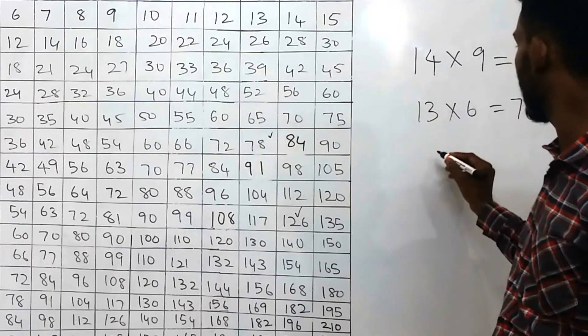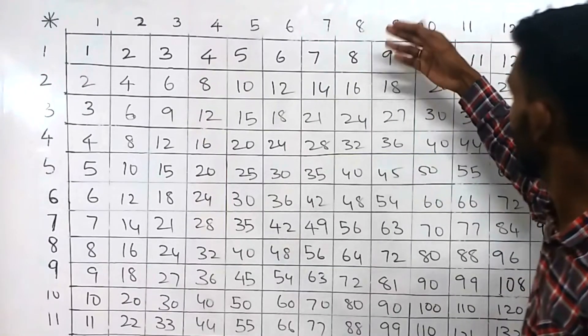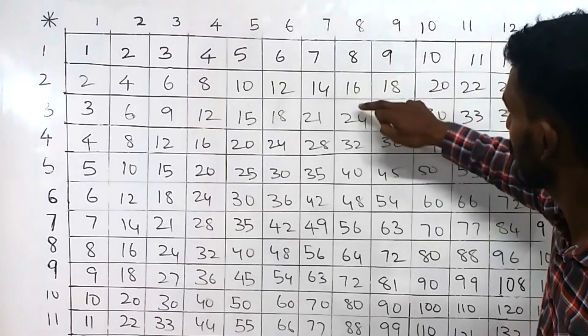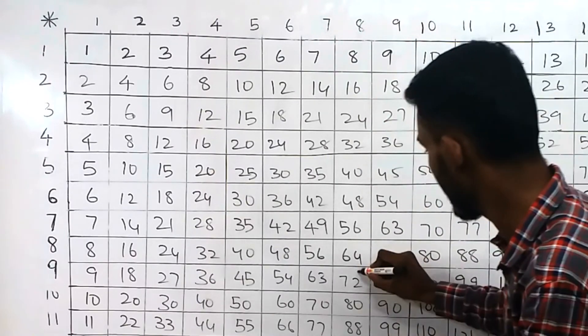Then another one table, that is 8 into 9. What is 8 into 9? From 8, we have to add 9 spots: 1, 2, 3, 4, 5, 6, 7, 8, and 9. That is 72.